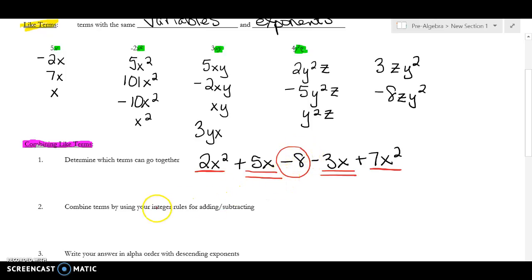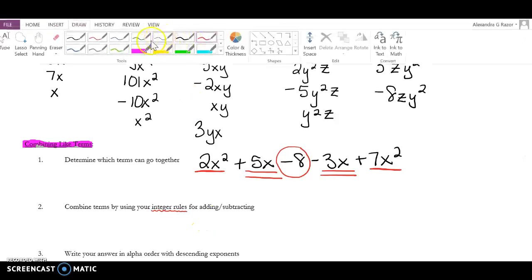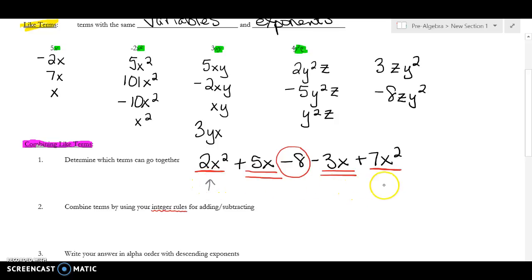And the last one I have is a number, so you can circle that because it's the only number. So now what I'm going to do is I have to use my integer rules. This is important. Some people are forgetting this. Remember, same sign, add, different sign, subtract. So the first thing I have is the 2x² and the 7x². Well, that is a positive 2 and a positive 7, so that is 9x². Some people will cross them off, which helps you know that you've taken care of it. Now I have a 5x and a -3x. 5 and a -3 is a positive 2x. So I can cross those off because I'm done with them. And then I have -8, and there's nothing to go with -8, so I just write it.